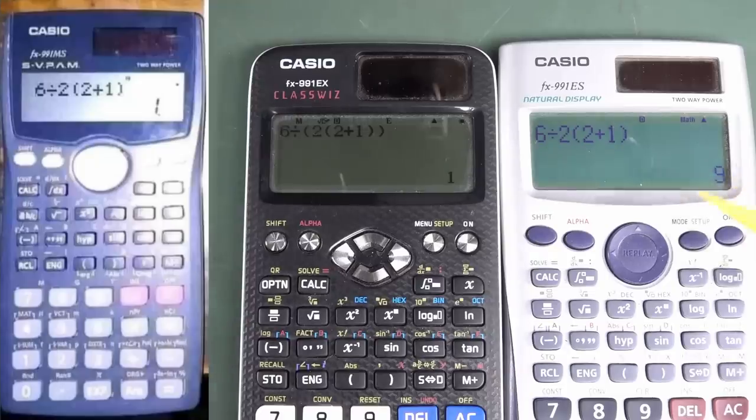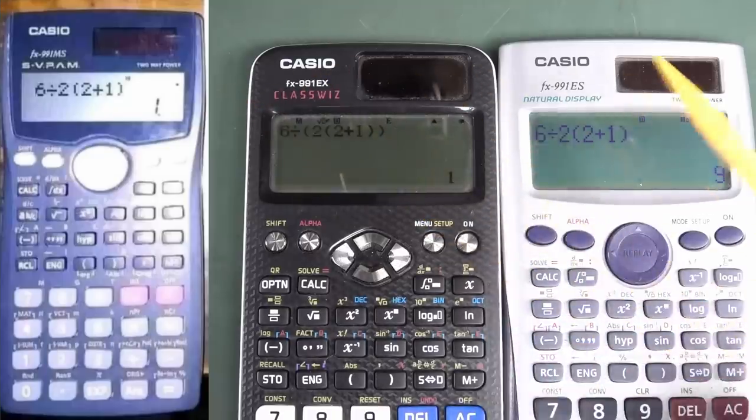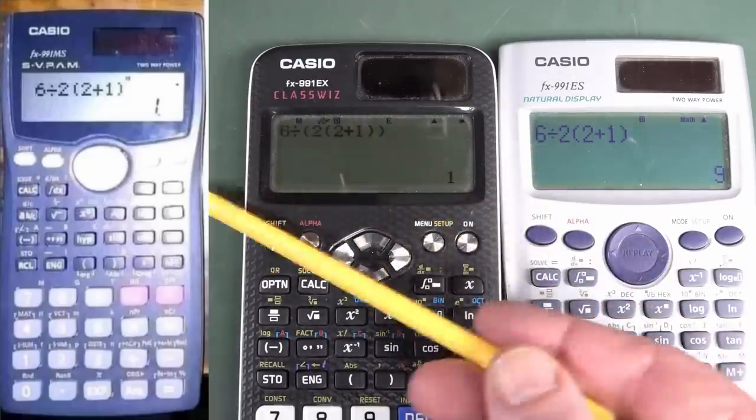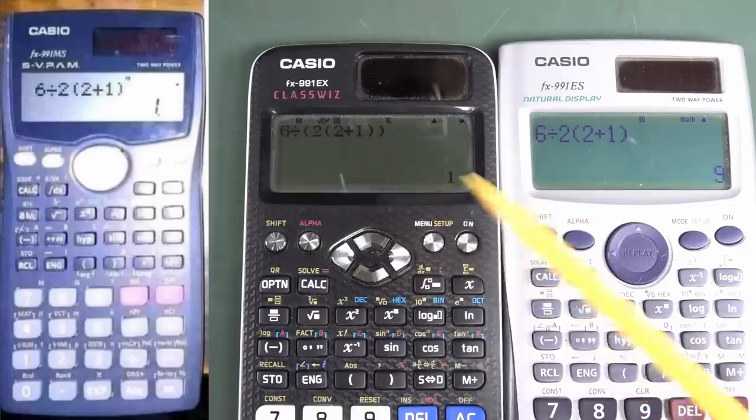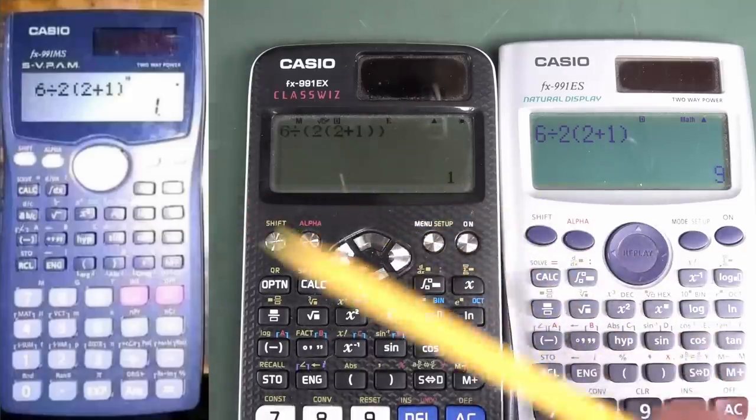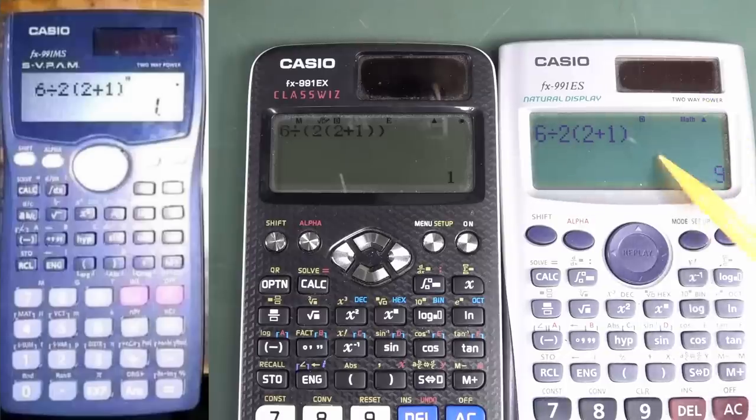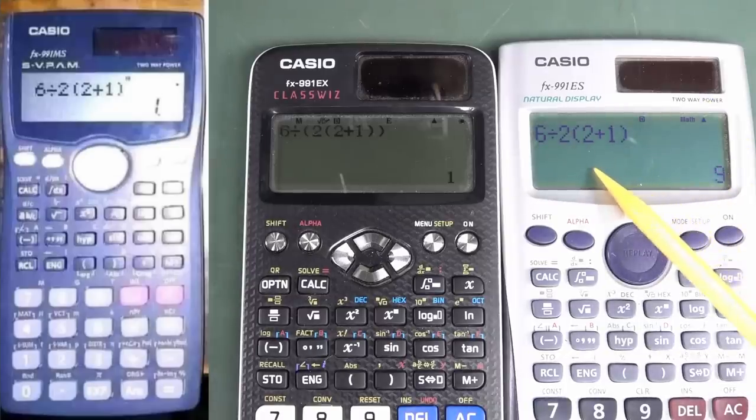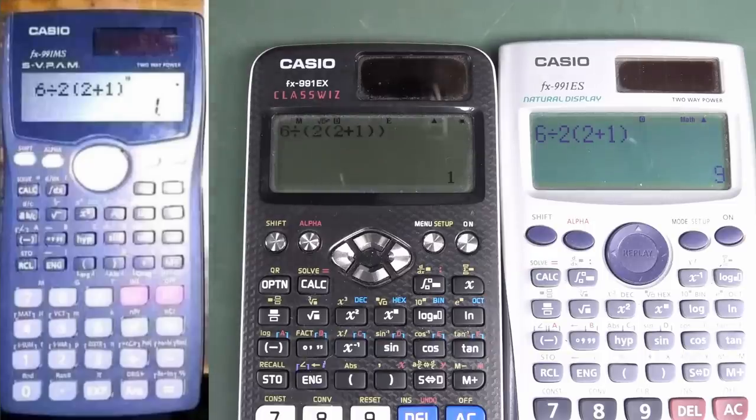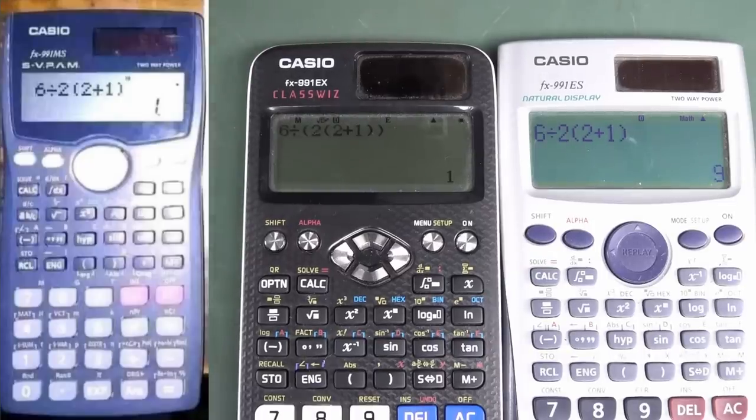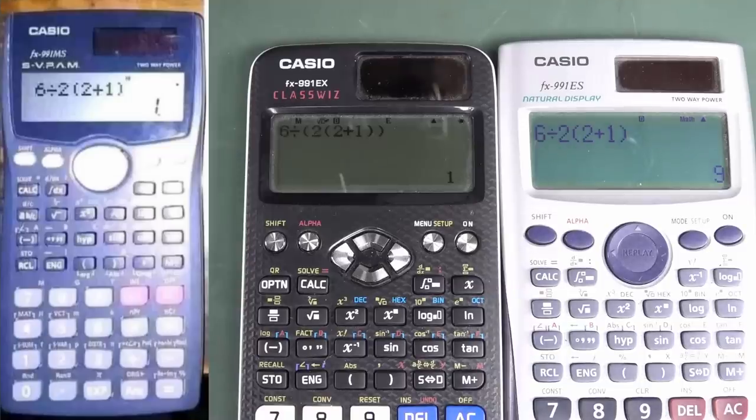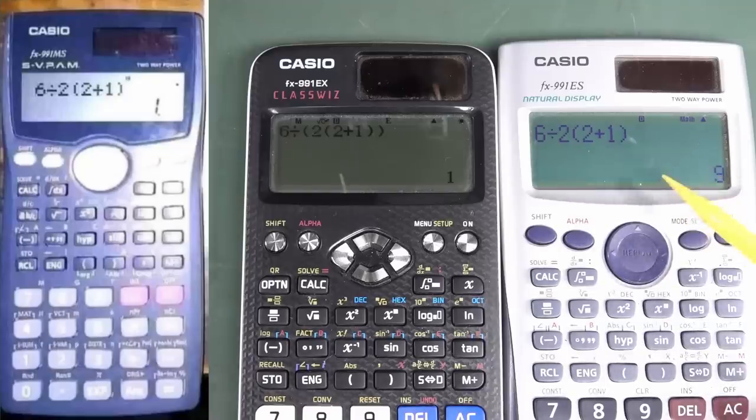What's going on here? This is nuts! We've got three FX991 calculators. Two of them give the result of 1, which is obviously using that distributive property, the higher priority for the implied multiplication. But the 991ES works the same as the TI and those online calculators. Huh? Well, this actually seems to come down to the markets that the calculators are sold in.